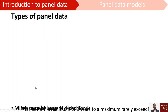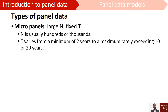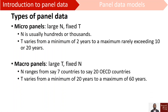In terms of types of panel data, we have micro panels. This is where we deal with a large number of units and a small time dimension — fixed T. So we can have hundreds or thousands of units to observe over, say, a minimum of two years to a maximum of maybe 10 or even 20 years.